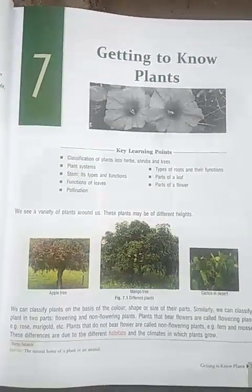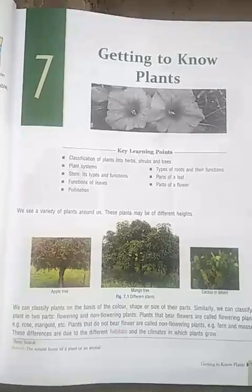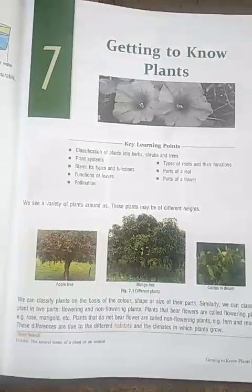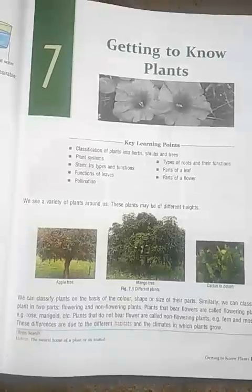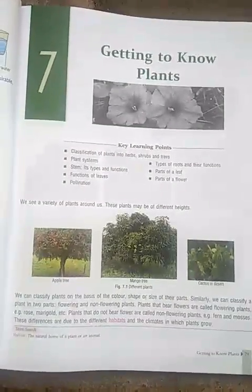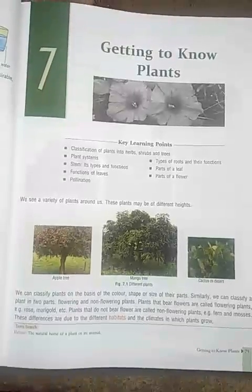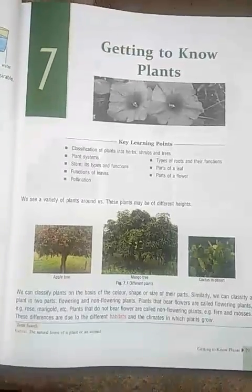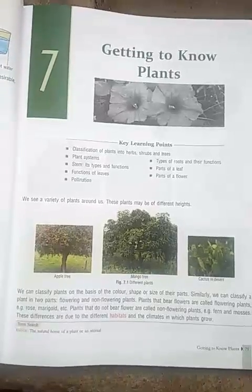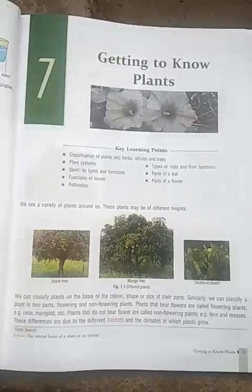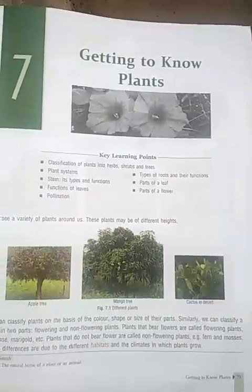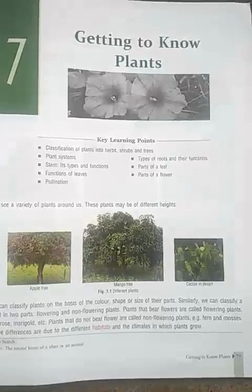Hello students, this is the Class 6 video, Chapter 7: Getting to Know Plants. We see a variety of plants around us. We can classify plants according to their shade, shape, size, and color. We can also classify plants as flowering and non-flowering. Plants that have flowers are known as flowering plants, for example rose, hibiscus, marigold. Plants without flowers, such as ferns and mosses, are non-flowering plants.